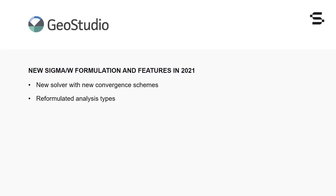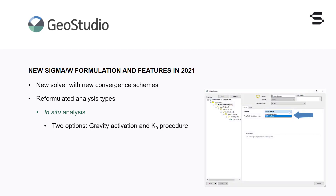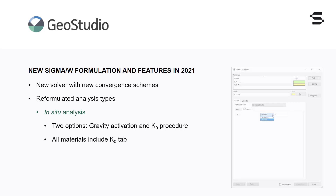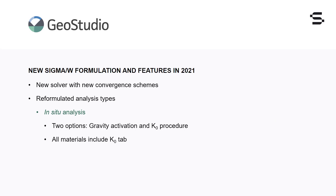In addition to the new solver, the Sigma W analysis types and material models were updated and expanded. Sigma W now has two in-situ analysis methods: gravity activation, which was previously available, and the K-naught procedure. The K-naught procedure requires that all materials applied to the domain have a valid K-naught value. All material models now include a K-naught procedure tab that allows for specification or calculation of the at-rest earth pressure coefficient. The relationship used to calculate the at-rest earth pressure coefficient depends on whether the soil model has a friction angle or over consolidation ratio defined.